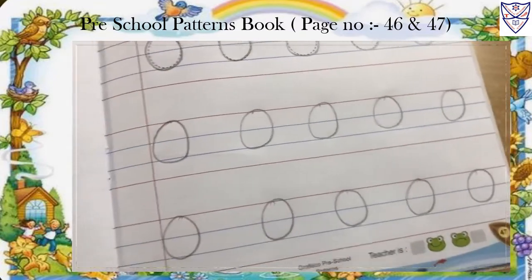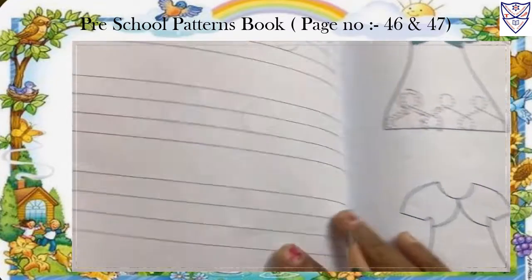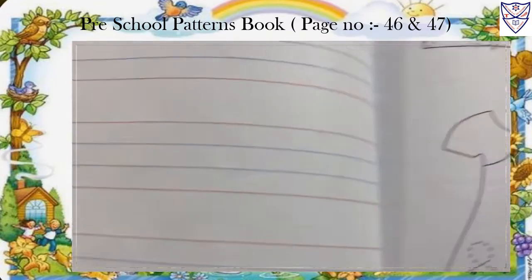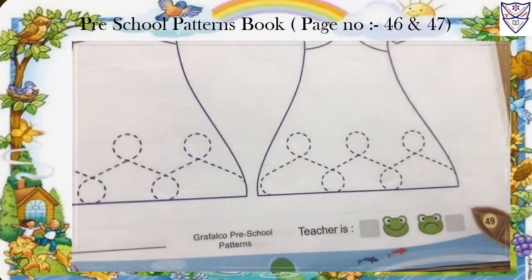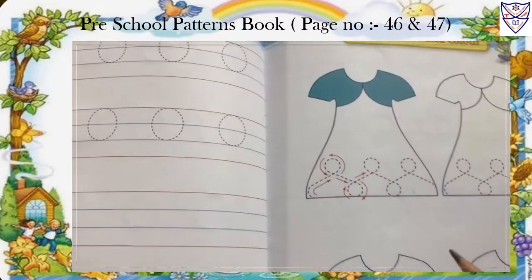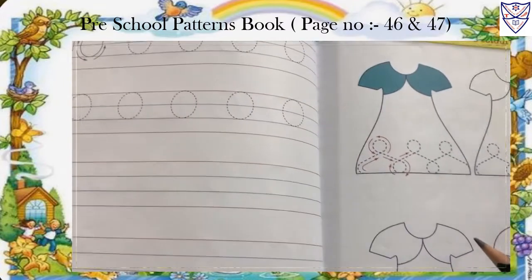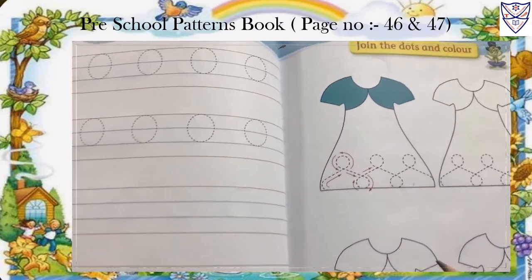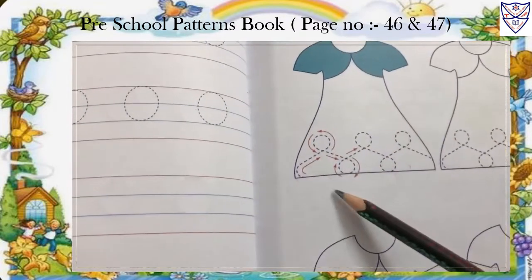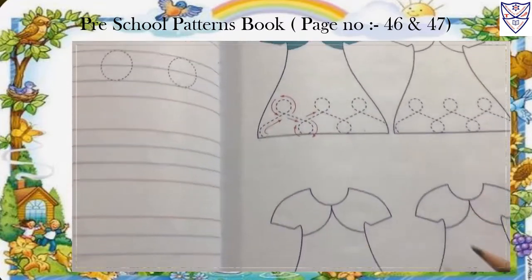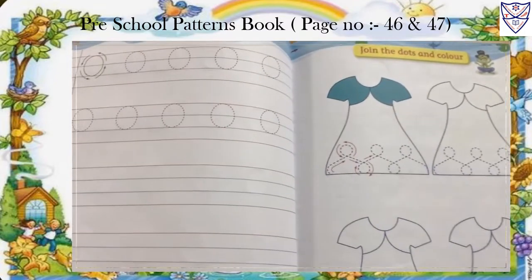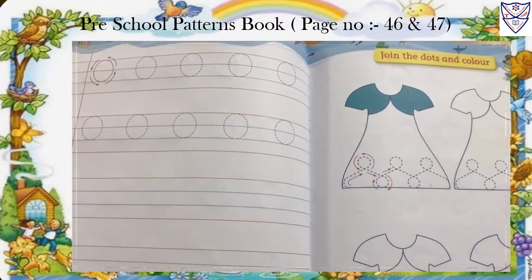Now, turn your page. Page number 48 and page number 49 — you have to do this as homework. Join the dots and color. You have to join these dots and fill color of your choice.